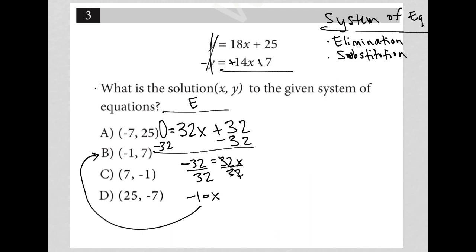If I were to have gone the substitution route, I could have said, well, I already have y isolated in both equations. I could just take the y value from the bottom and replace this y value up top. I'm going to substitute it, which means I'd have a new equation that says negative 14x minus 7 equals 18x plus 25.